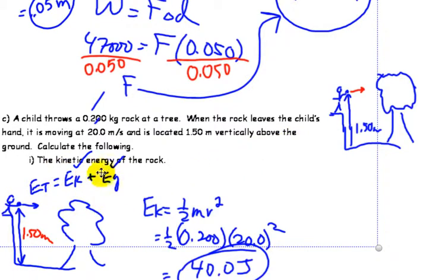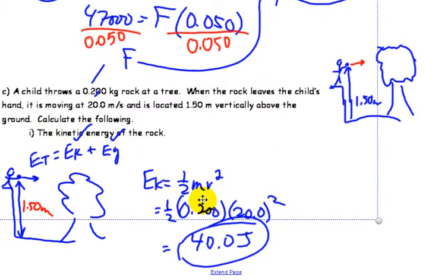So I left you with this question. Because the boy is holding the rock above the ground, it has potential energy, and because it has a velocity at the start, it has kinetic energy. So to figure out the kinetic energy, one-half mv squared, so one-half times the mass times the velocity squared, 40.0 joules. So that's the kinetic energy part.